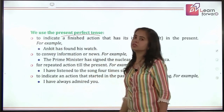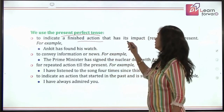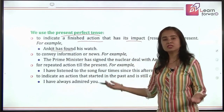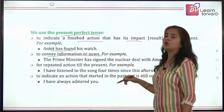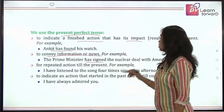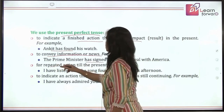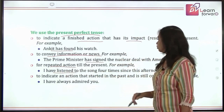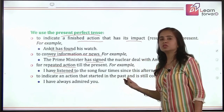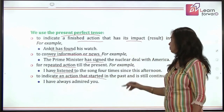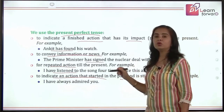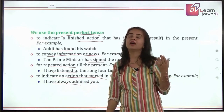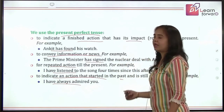What are the uses of present perfect tense? First, to indicate a finished action that still has its impact on the present — like: Ankit has found his watch, so he is happy. Second, to convey information or news — like: The prime minister has signed the nuclear deal with America. Third, for repeated action till the present — like: I have listened to the song four times since this afternoon. And fourth, for an action that started in the past and is still ongoing — like: I have always admired you.